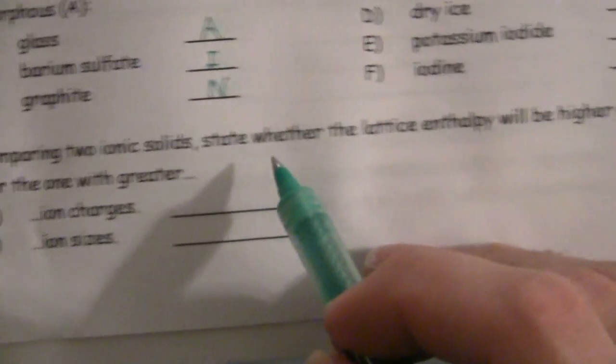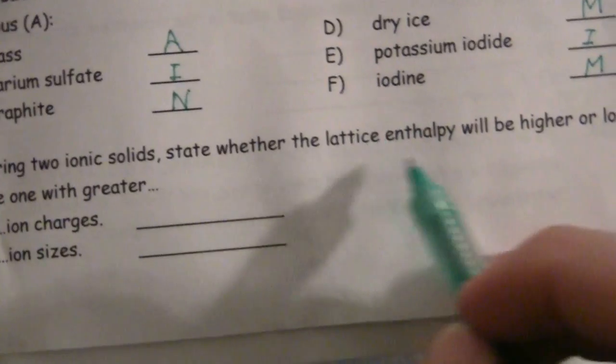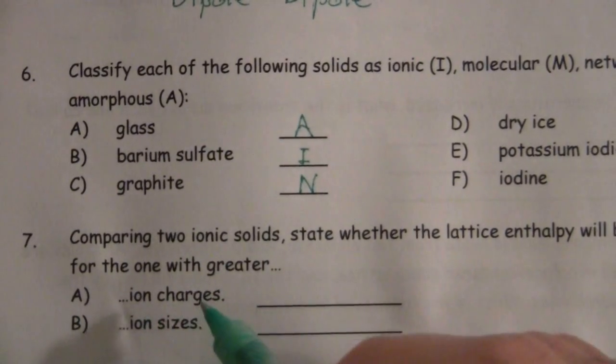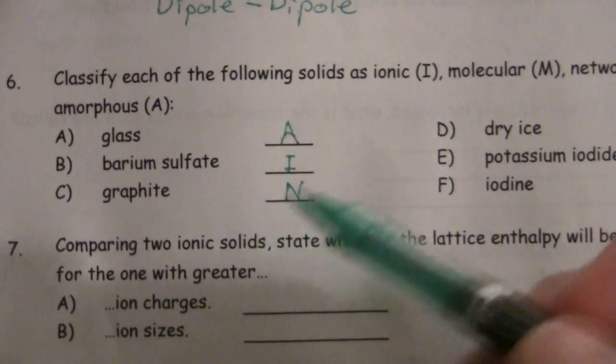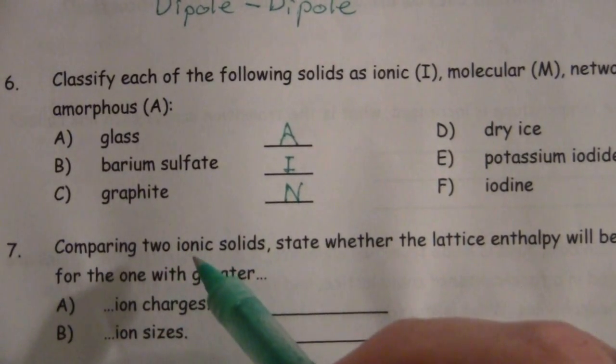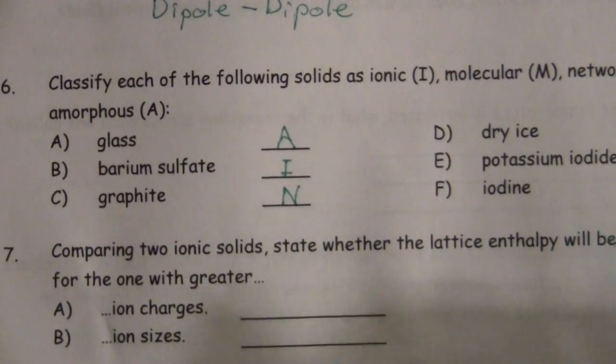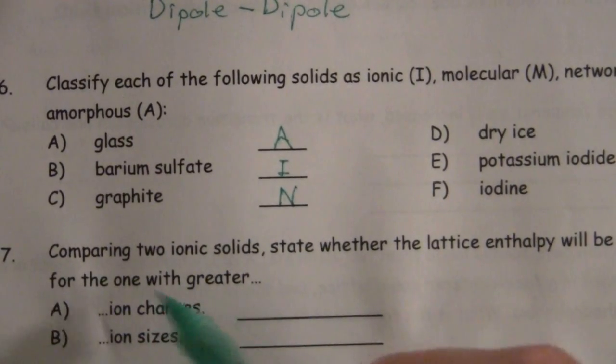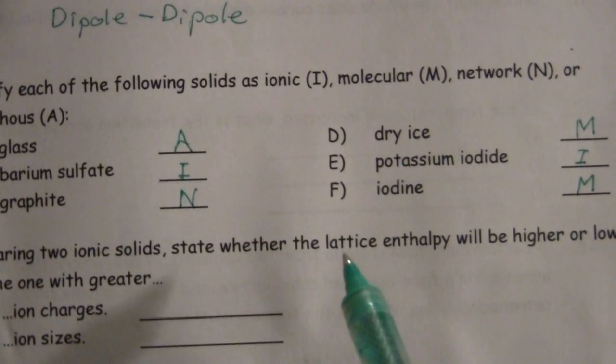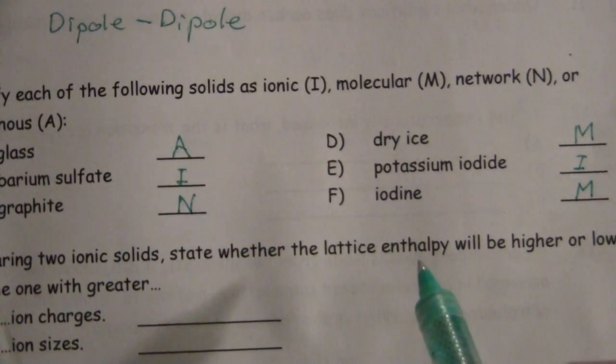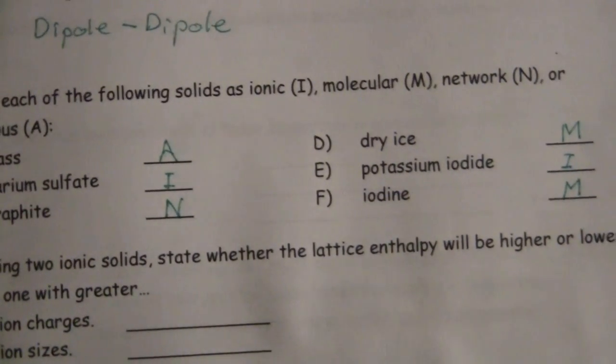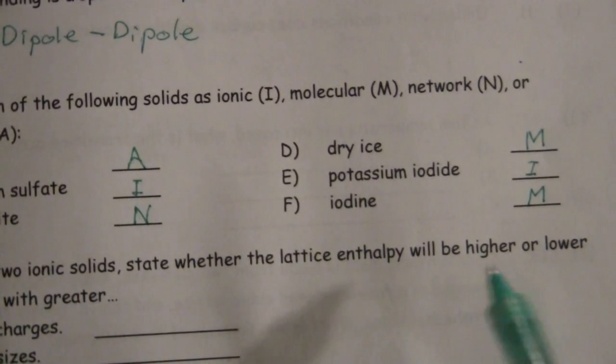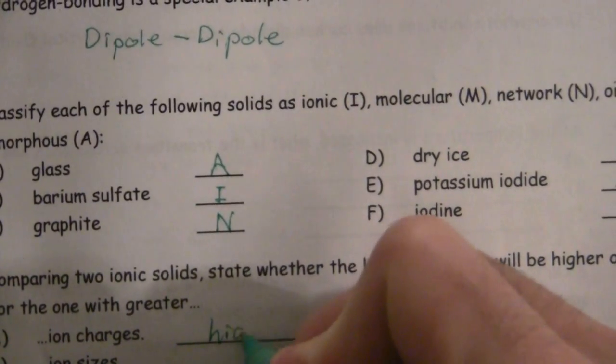Question number seven, comparing two ionic solids, state whether the lattice enthalpy will be higher or lower for the one with the greater ion charges. So if you have greater ion charges, say comparing NaCl with MgS, the one with greater ion charges, what is that effect on the lattice enthalpy? Well the lattice, it's going to have a stronger bond uniting those and so the lattice enthalpy is going to be higher.